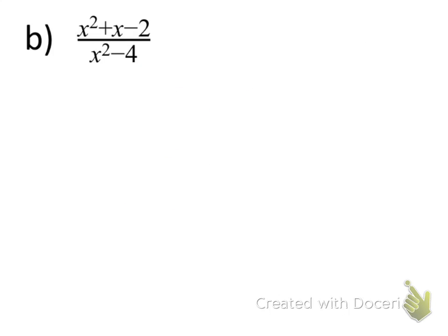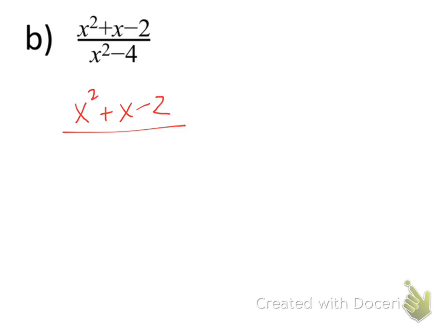This next example I'd like you to try on your own. First, can we cancel out the x² on the top and bottom? Again, we cannot, because there is addition involved — the x² is being added to something, not just multiplied. If it were x² times something in parentheses, we could cancel. Since we can't, we need to factor. Note that the denominator can be written as x² + 0x - 4. Go ahead and do that, and we'll discuss it in class tomorrow.